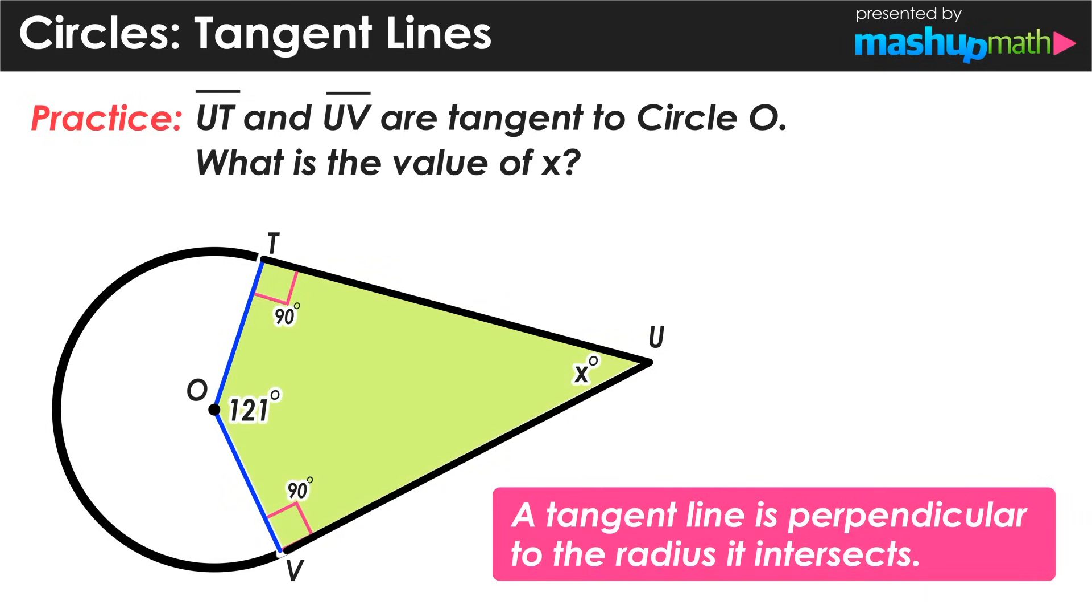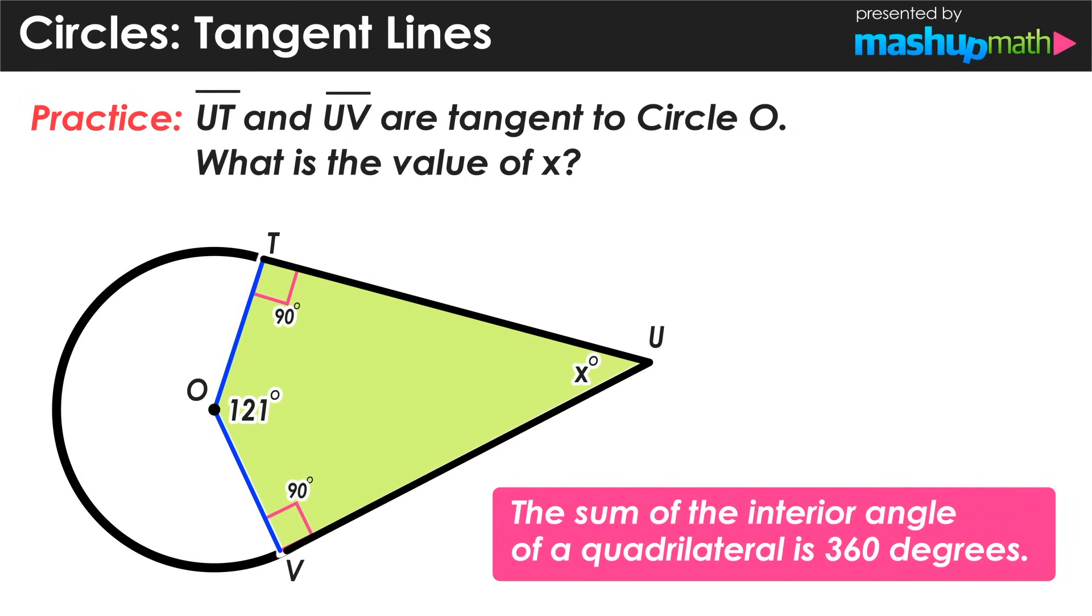We should also notice that we are dealing with a quadrilateral here in this diagram. And we know that the sum of the interior angles in any quadrilateral is always equal to 360 degrees. So if we take these four angle measures and add them together, their sum will equal 360. And we can use this fact to find the value of x.